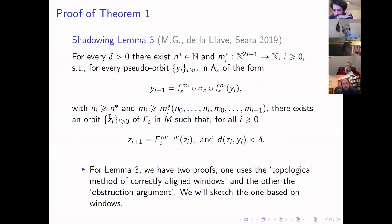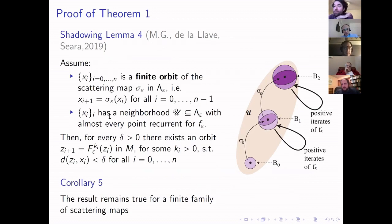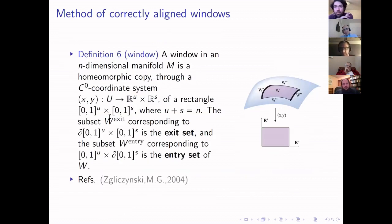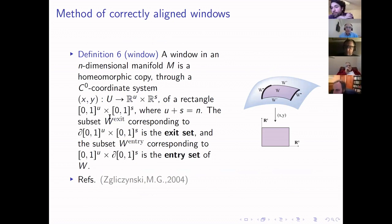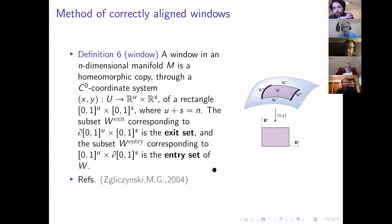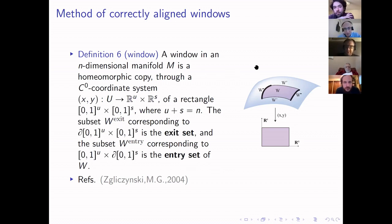I want to talk about the argument behind the proof of this shadowing lemma. This is the topological mechanism we call the method of correctly aligned windows. The main reference is Zgliczynski and myself; instead of windows we use a different terminology — h-sets and covering relations.